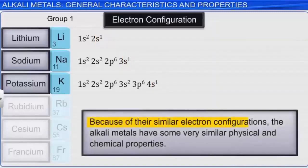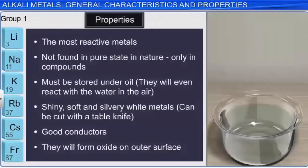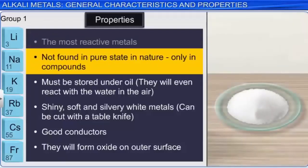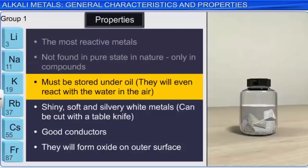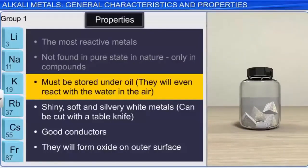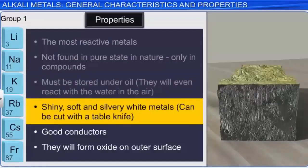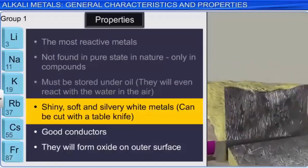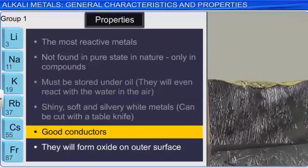The group 1 metals are the most reactive metals known. They are so reactive that they are never found in their elemental state in nature, only in compounds. Since they all react with water, they must be stored under oil. They will even react with water in the air. The alkali metals are all shiny and silvery in appearance, so soft they can be cut with a table knife, and good conductors of both heat and electricity. They will form a dull oxide layer on their surface when exposed to air, which can be cut away to reveal the shiny interior.